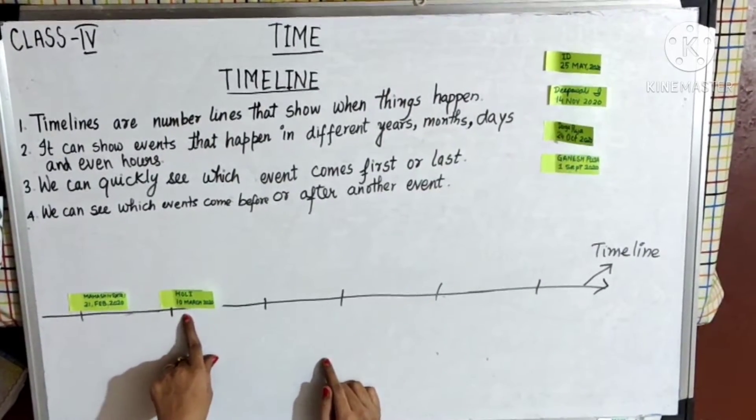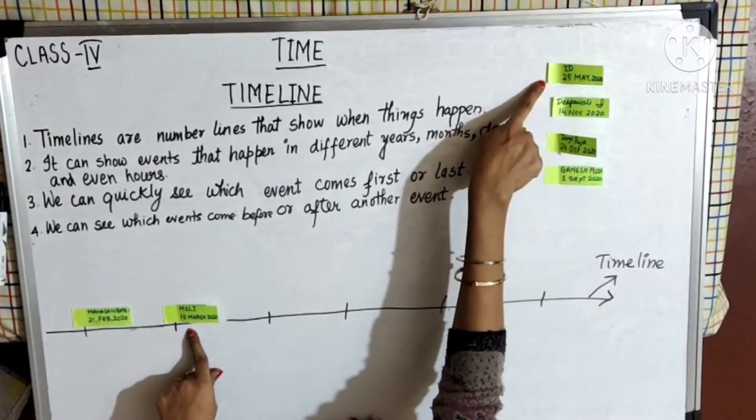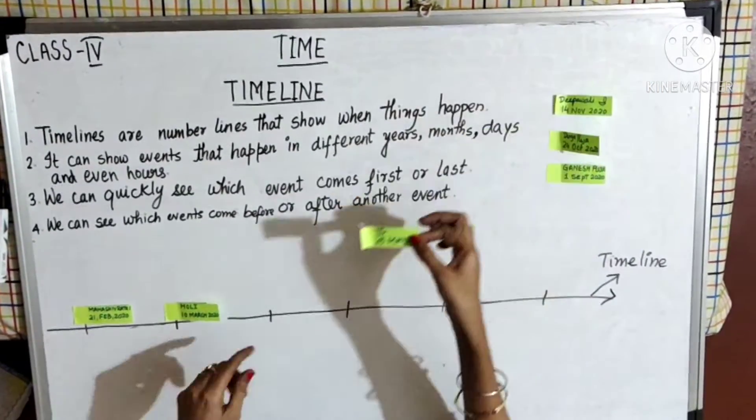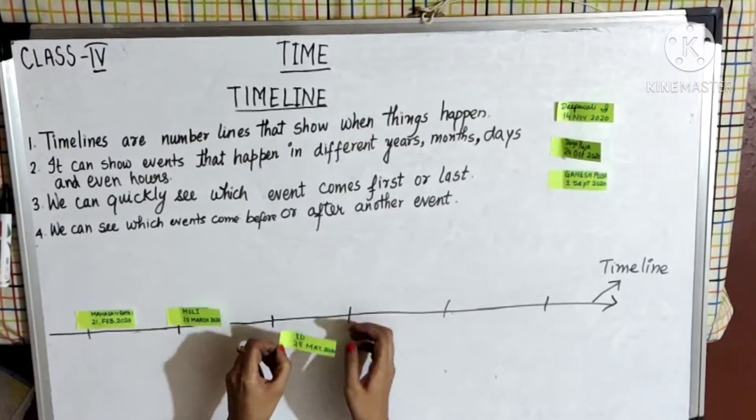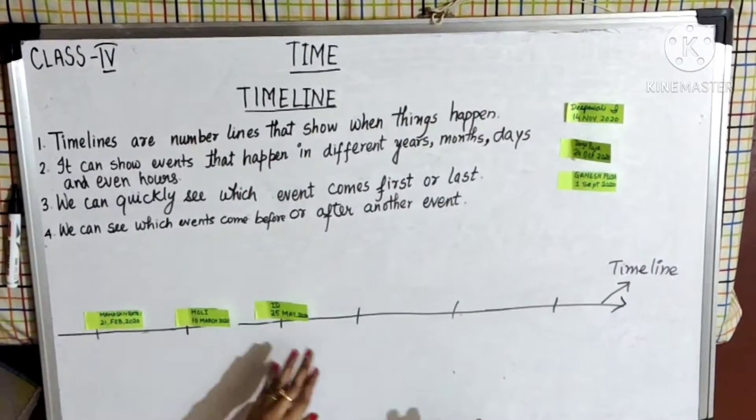Now February, then March, then comes April. Since there is no festival in April, next is May. Eid was on 25th of May 2020. This will be my third event on my timeline.